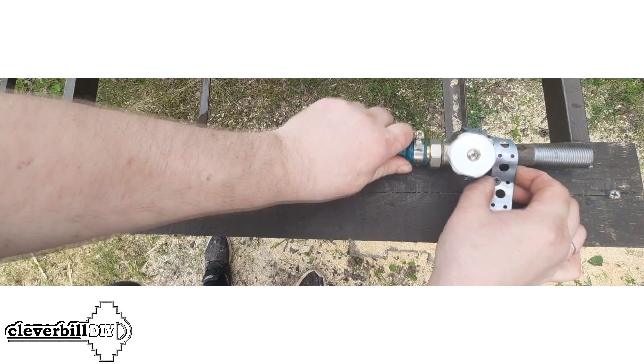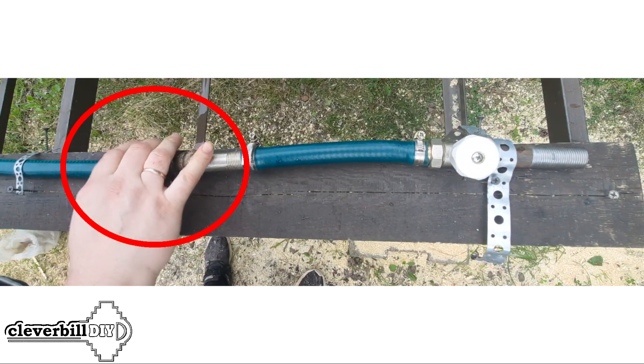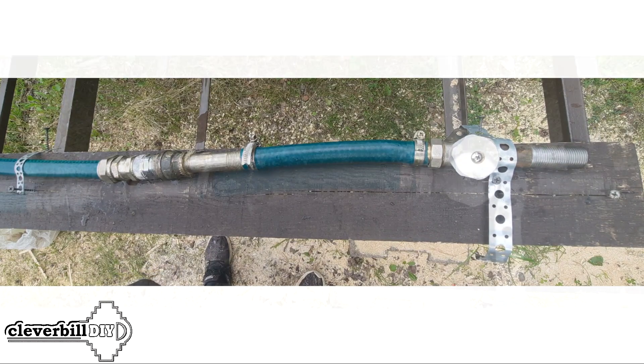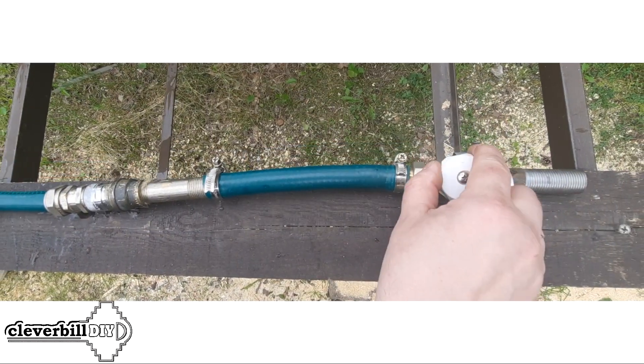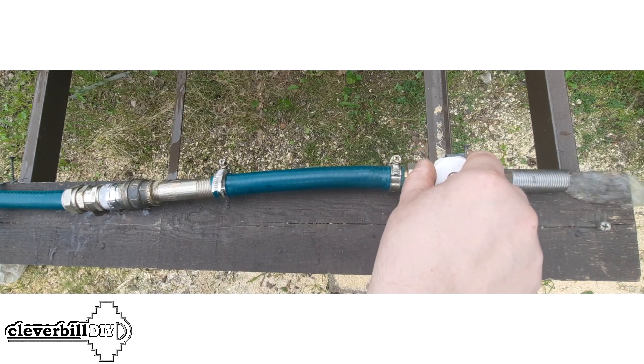Having installed the valve in the garden hose, which will play the role of the hose leading to the washing machine, I install a valve at the end of the hose. I supply water under pressure to the hose. Smoothly opening the valve, it becomes clear that there is water in the system.